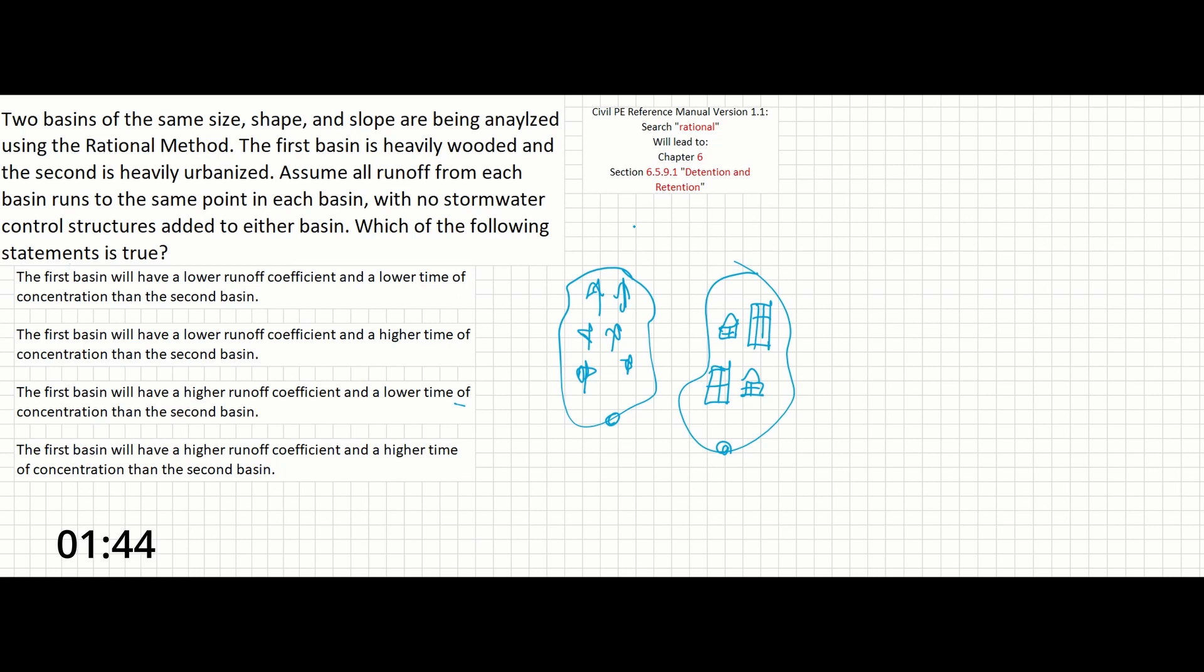Page 406 or PDF page 418 will give you the rational method. It's pretty much just going to show you that volume equals I times area times C times T, where I is the intensity of rainfall, C is the rational method runoff coefficient which is called out in the problem, A is the drainage area, and T is the time of concentration.